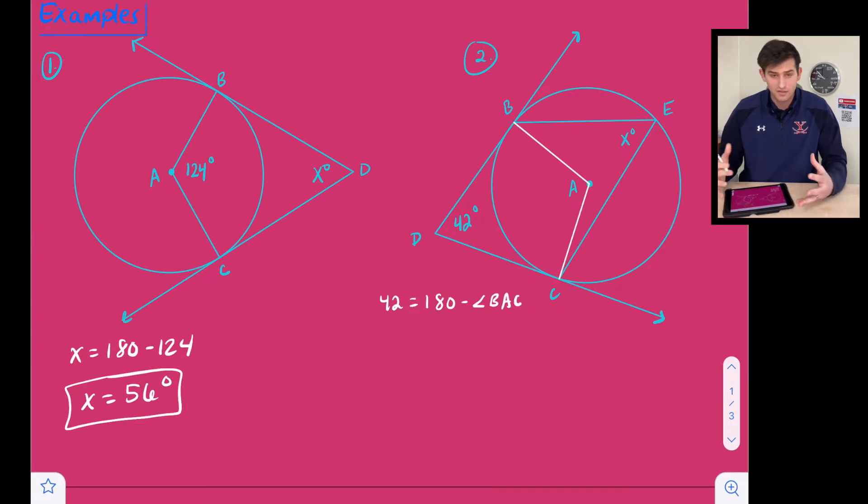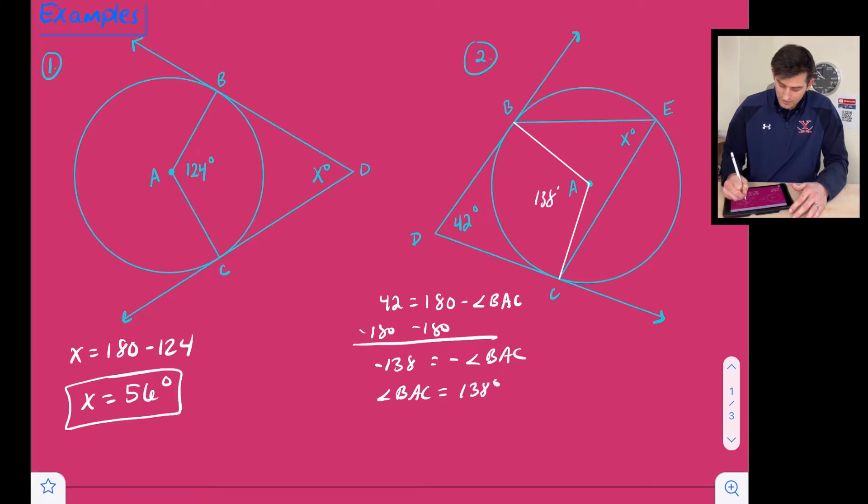Now we could solve for that because if we subtract 180, then that's going to give us negative 138 equals negative angle BAC, which means angle BAC is equal to a positive 138 degrees. So we could add 138 in there.